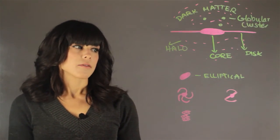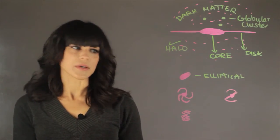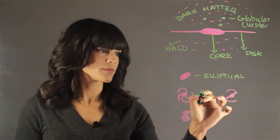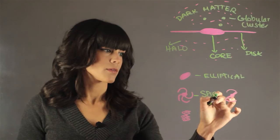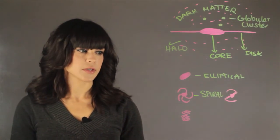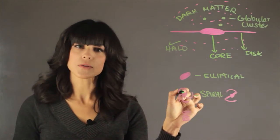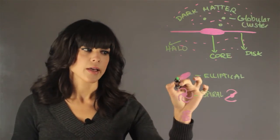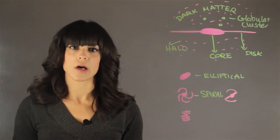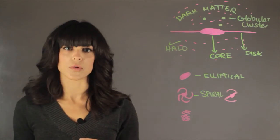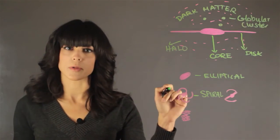And then we have the cool looking ones. We have the spiral one. And spirals are interesting. They have the older stars towards the center. And on the arms, there is a lot of star formation. So all the birth of stars are coming from the arms.